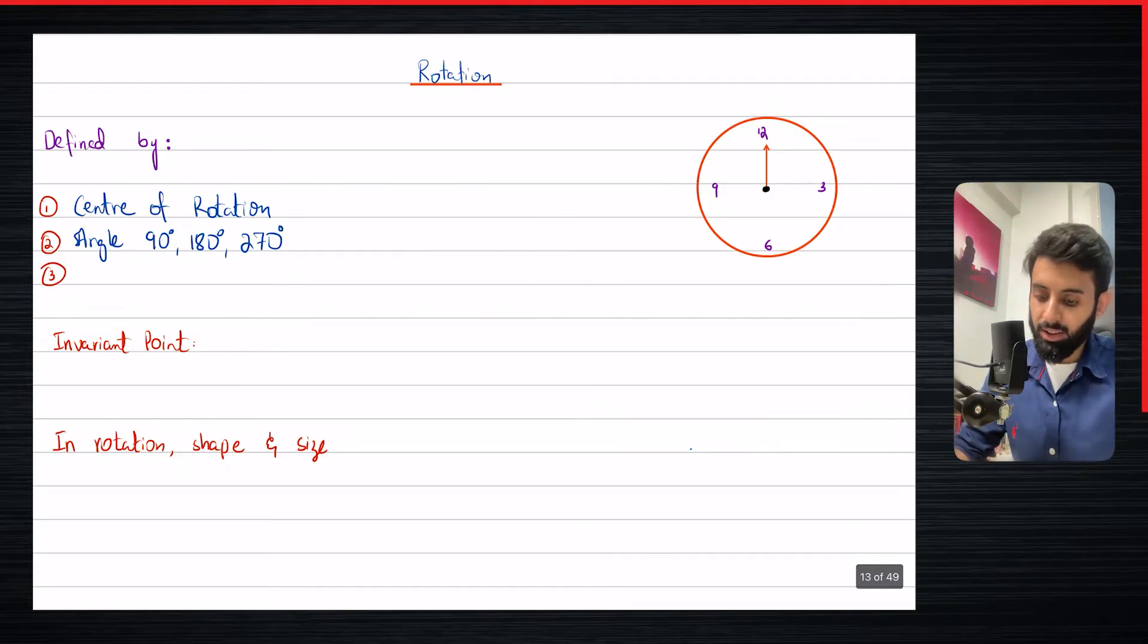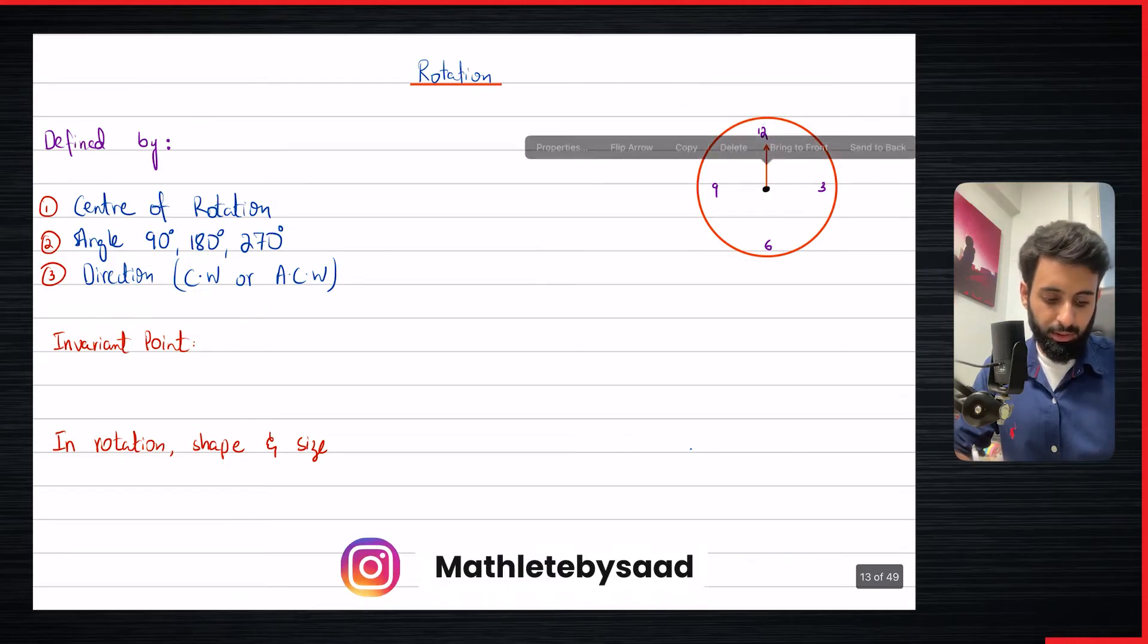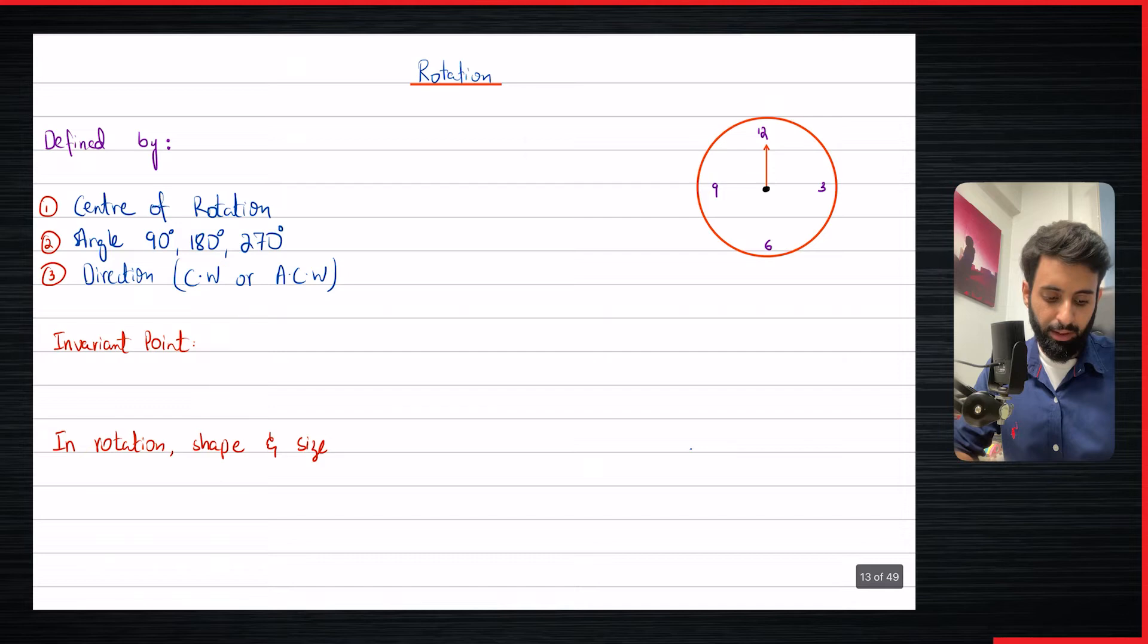The third - and that's the reason why I've drawn this clock over here - is the direction. By direction we mean it's either going to be clockwise or anti-clockwise. It's a good idea to know what clockwise direction is. This hand that I'm now rotating, this hour hand, I'm rotating it in a clockwise direction. This direction is anti-clockwise direction.